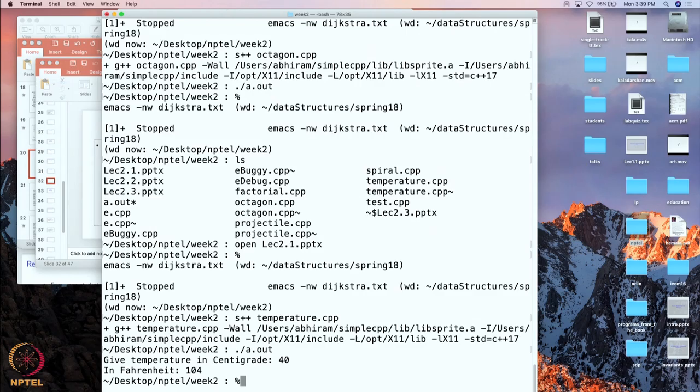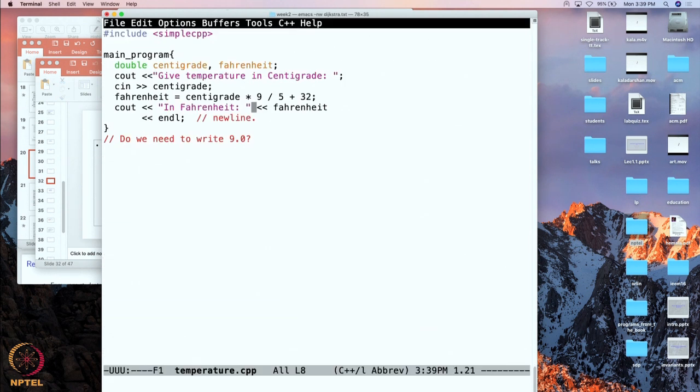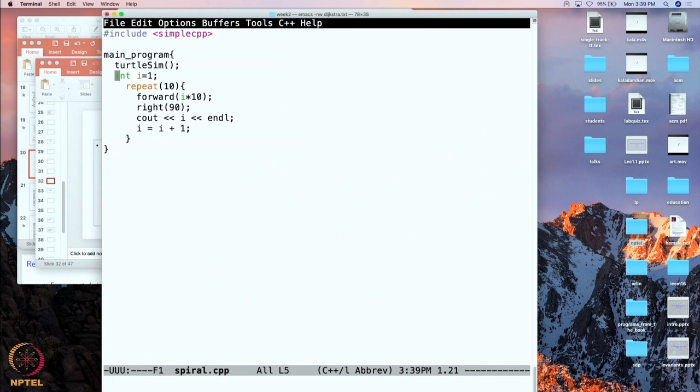So this program also I have keyed in and it is called spiral.cpp. So here is the program and I guess what I have not put in over here is this wait.